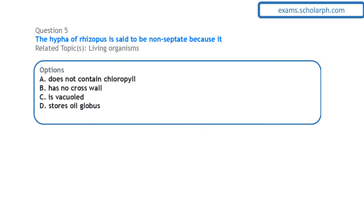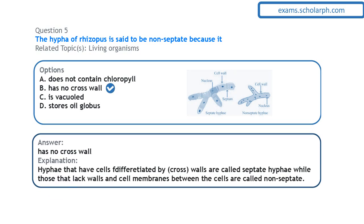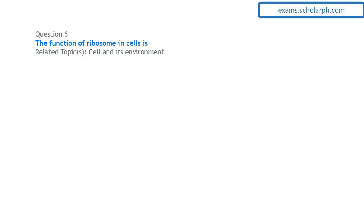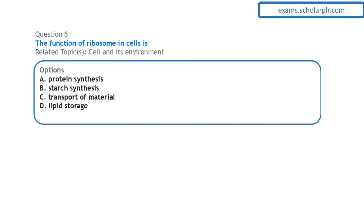The hyphae of rhizopods are said to be non-septate because they have no cross-walls.